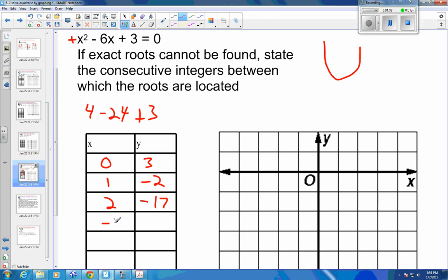This would be 7, 24 minus 7 is going to be negative 17. So going the other way, let's try negative 1 and see where that puts me. So negative 1 squared is positive 1, and negative 1 times a negative 6 is a positive 6, and plus 3, this is going to be 6, 7, 8, 9, 10, this is a 10.